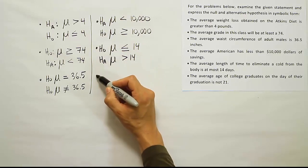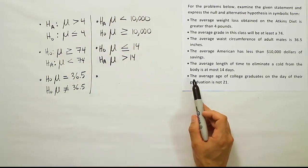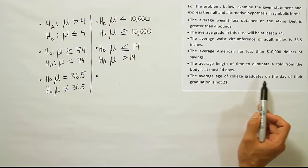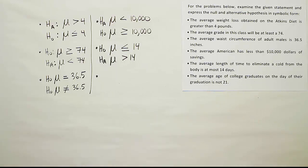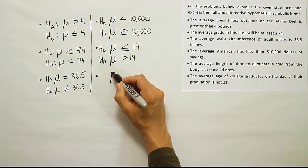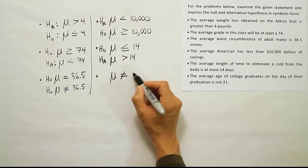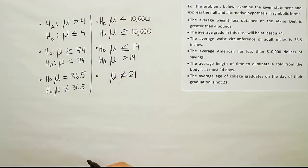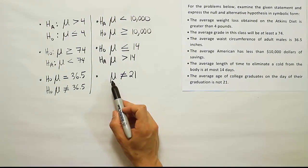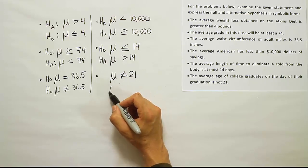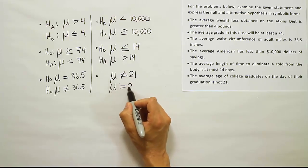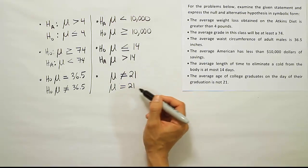The final scenario: The average age of college graduates on the day of their graduation is not twenty-one. The average is not equal to twenty-one. So if this says the average is not equal to twenty-one, its partner must be equal to twenty-one, because the only time this isn't true is if it's actually twenty-one.